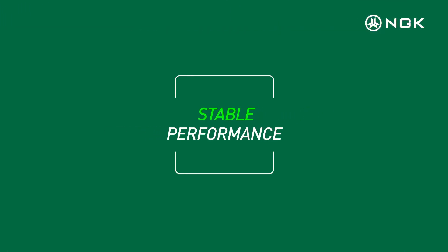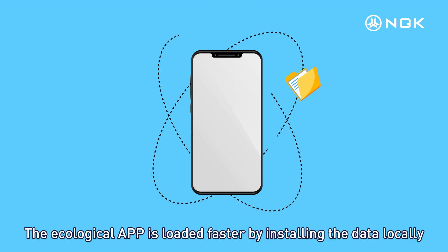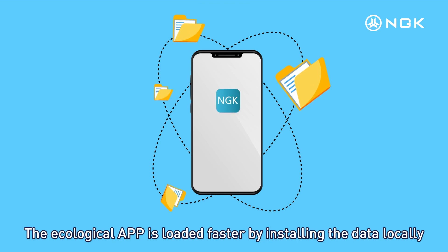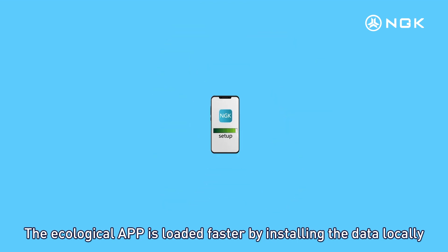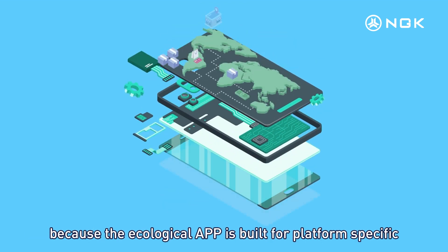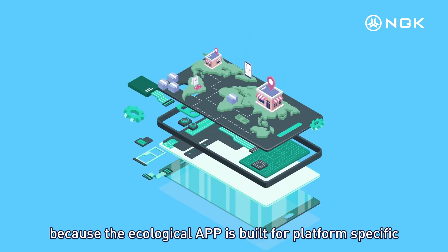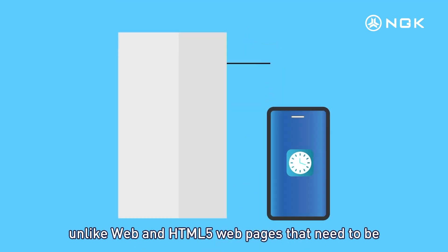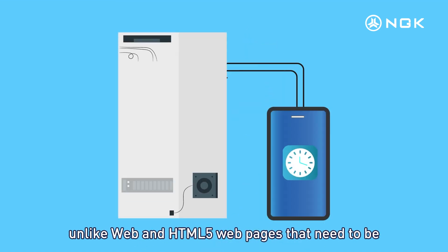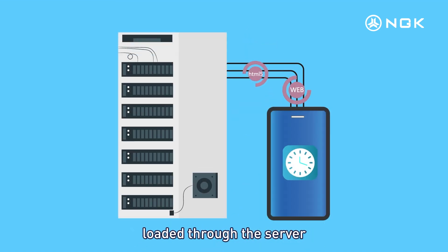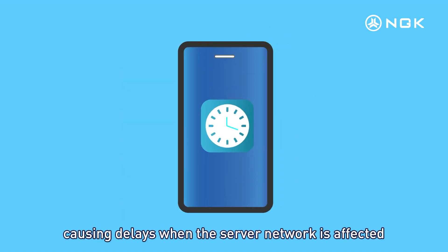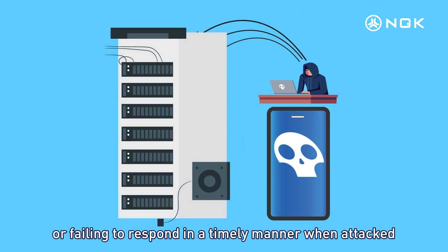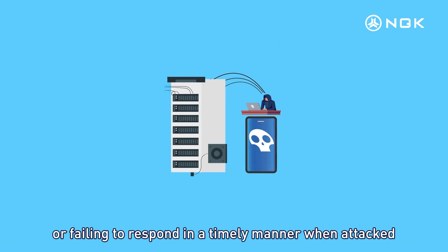Stable Performance. The Ecological App loads faster by installing data locally because it is built for platform-specific environments, unlike web and HTML5 pages that need to be loaded through the server, causing delays when the server network is affected or failing to respond in a timely manner when attacked.